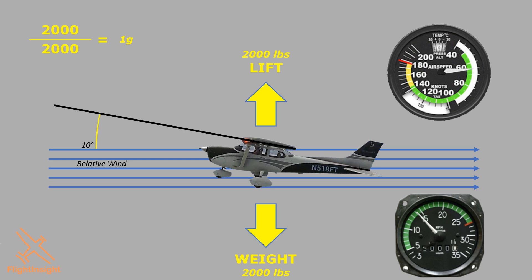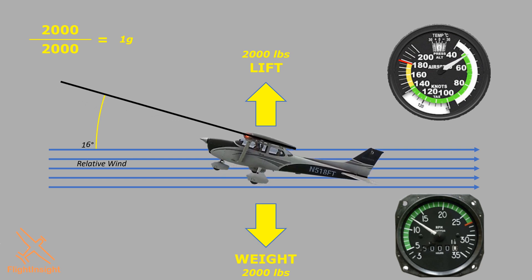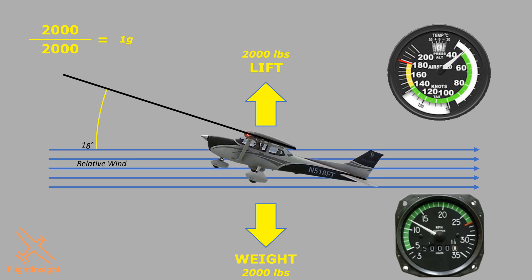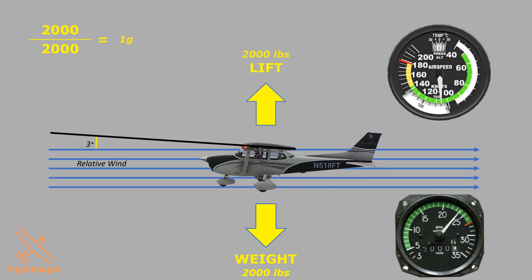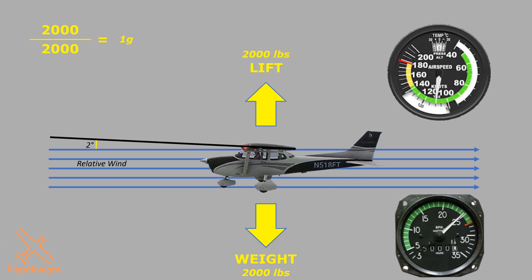If you've done slow flight before, you know that you don't feel particularly heavier or lighter as you slow the aircraft down. If we pull the power back further, maintaining lift requires us to continue increasing angle of attack. Eventually, our angle reaches 18 degrees — the critical angle of attack for our aircraft. Notice our speed is below the green arc; we've reached VS-1, the stall speed in this configuration. The aircraft will stall, and a well-designed, properly loaded aircraft will pitch down, decreasing angle of attack and breaking the stall.